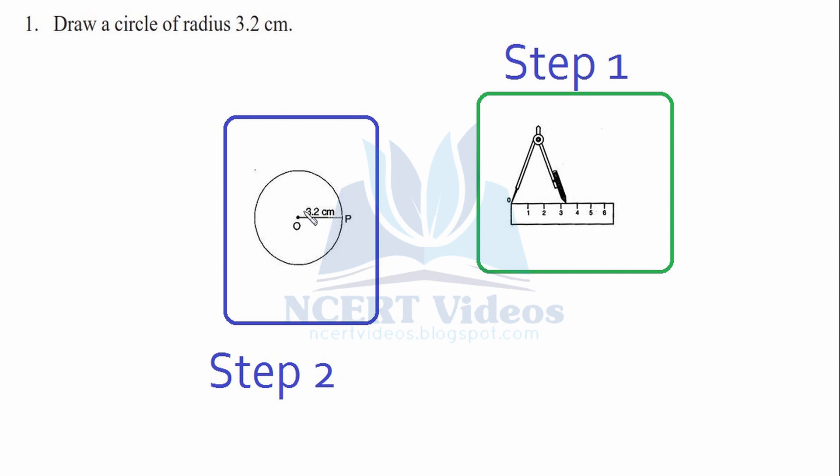You will mark O and E respectively and write 3.2 cm. This was your construction of a circle of 3.2 cm.